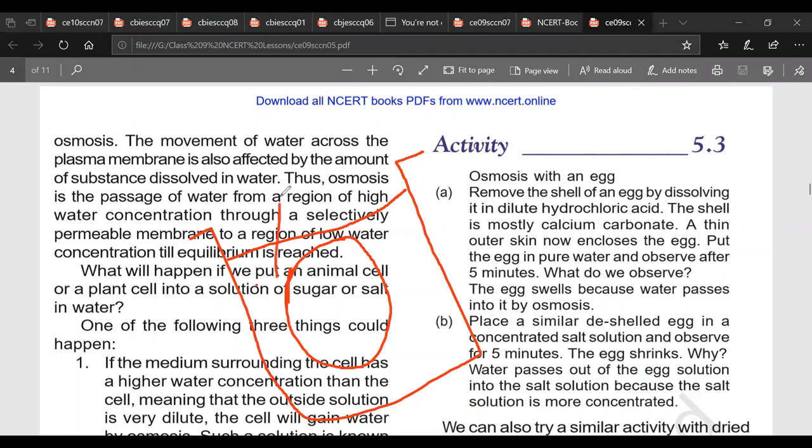Now this shell will dissolve and inside plasma membrane will be visible. The egg will become very soft. Now you transfer this egg in water. Now egg has some salt content in it. Outside is water, so water will form hypotonic solution. Water always moves from hypotonic to hypertonic solution, so endosmosis will take place. As a result egg will swell up.